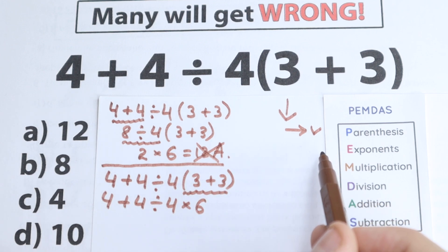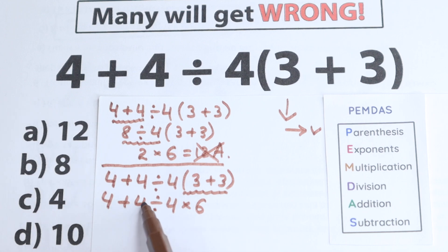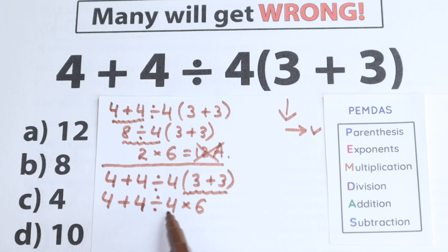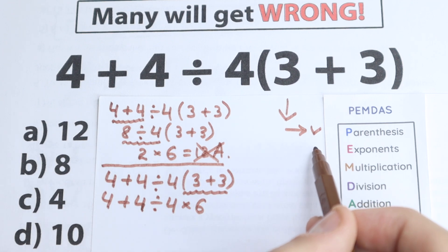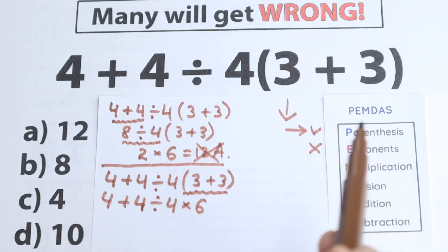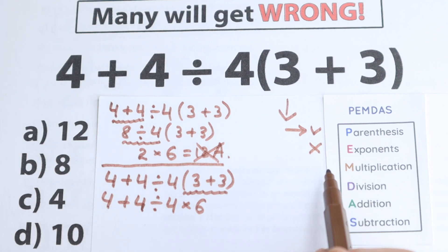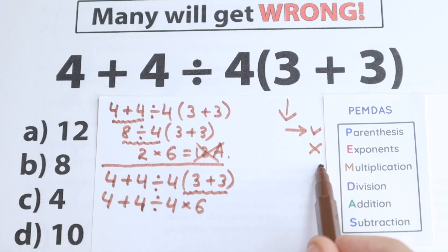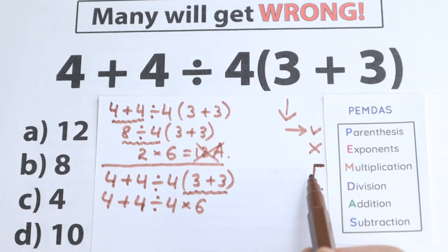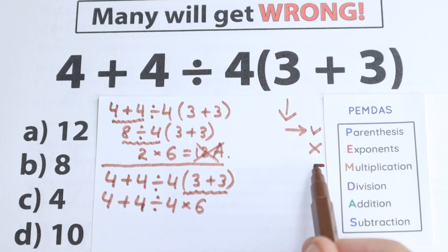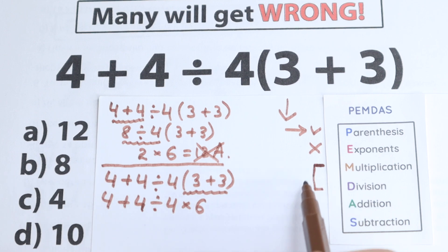This is the correct solution — let's continue. After parentheses, the next step is exponents. Let's look: do we have any exponents, squares, or powers here? No, we don't have any exponents, so we skip this part. Next step: multiplication and division. Many students think only about multiplication, but according to PEMDAS, multiplication and division form one common group, and we go from left to right within that group.